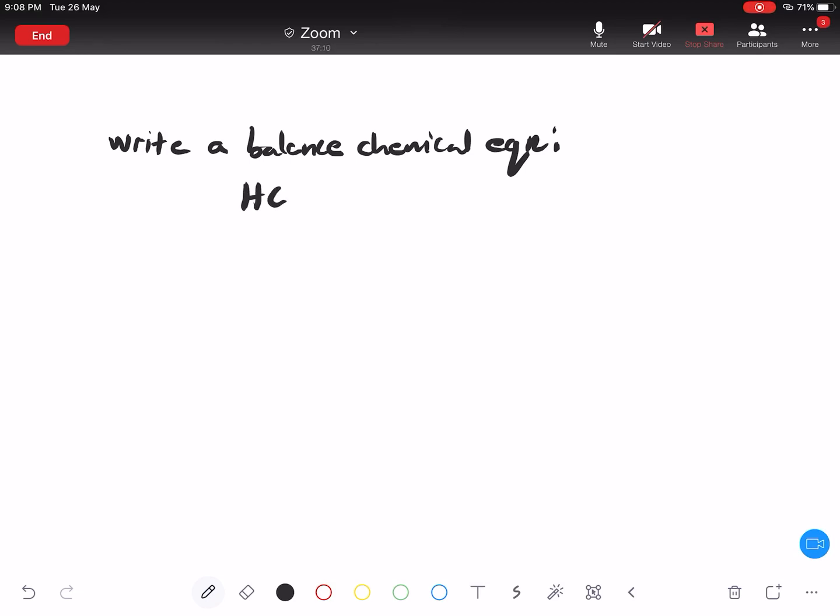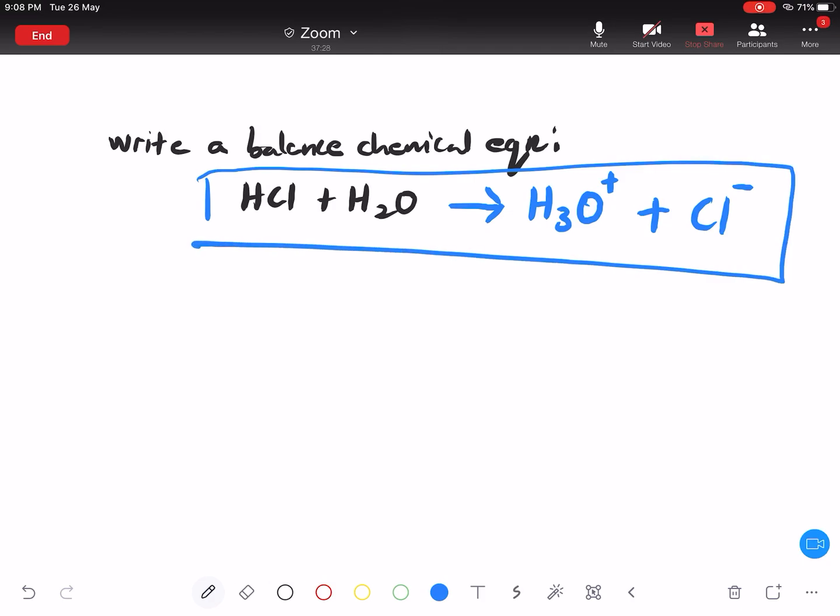Between HCl and H2O. Guys, listen. You should write, you sepatutnya tulis H3O tambah, tambah Cl minus. Ini adalah persamaan kimia yang seimbang. Tapi kalau dia cakap, okay?